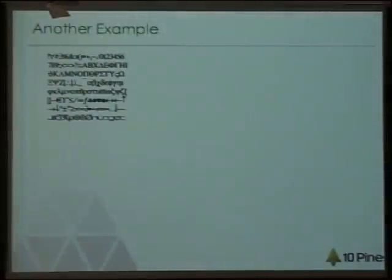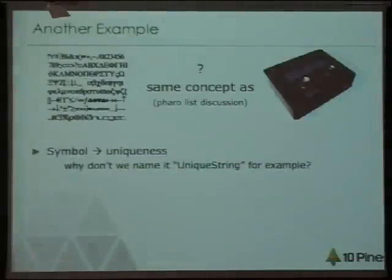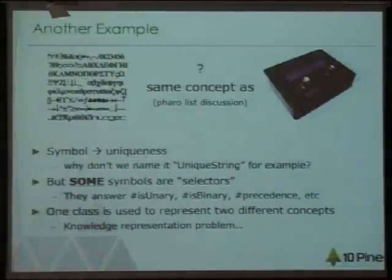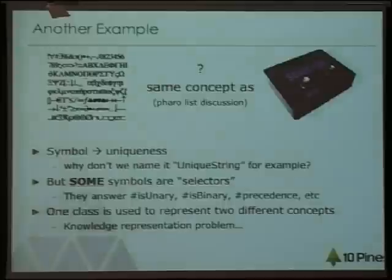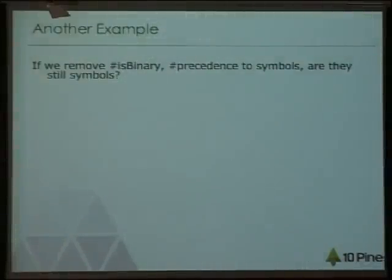Another example: are symbols the same as selectors? This was a discussion in the Pharo mailing list that Stefan fired a couple of weeks ago. For me, they are not the same. Symbols have some meaning — the main one is that they are unique. And some symbols are selectors, but not all of them. If we think about this from the knowledge representation point of view, it's not good to use one class to represent two different things. If you remove selector methods from those objects that are really symbols, are they still symbols? Yes, they are — they don't need to answer isBinary, precedence, or whatever, because they are symbols, not selectors.